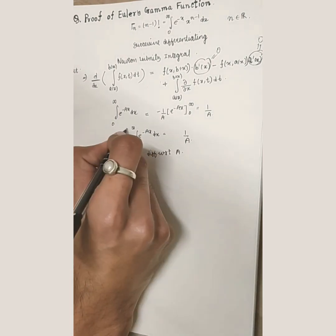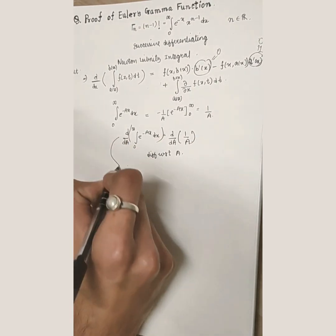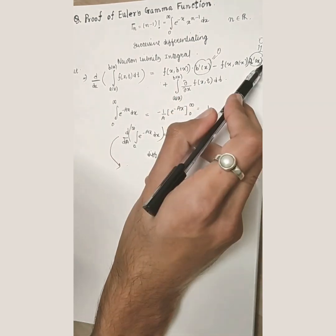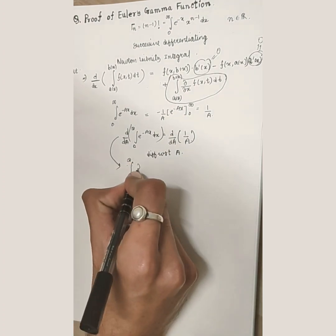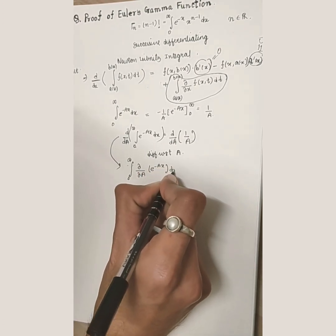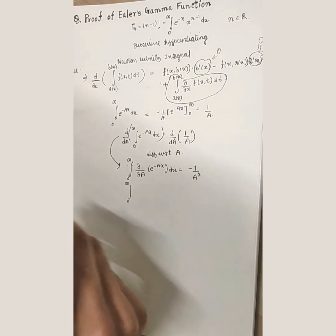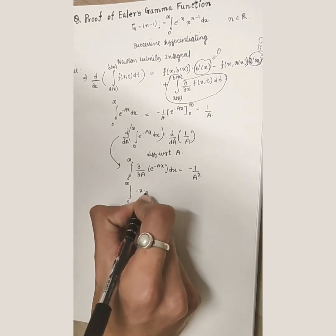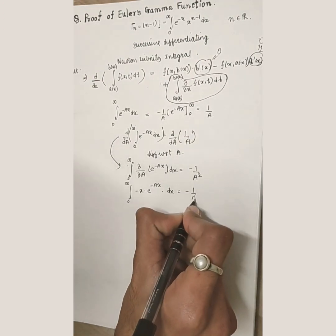Differentiating with respect to a: on the left side, since 0 and infinity are constants, by Newton-Leibnitz the result is the integral from 0 to infinity of the partial derivative with respect to a of e^(−ax) dx. On the right side, differentiating 1/a gives −1/a². Evaluating the partial derivative inside gives −x · e^(−ax), so we get the integral of −x · e^(−ax) dx = −1/a².